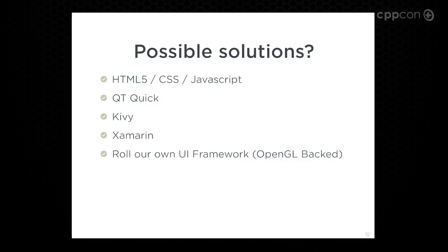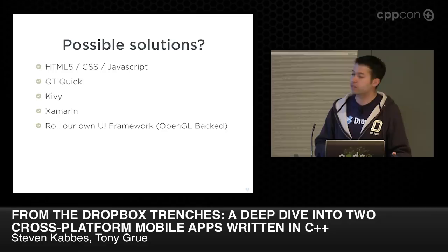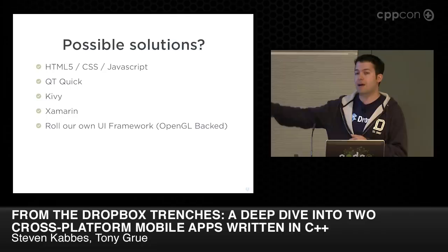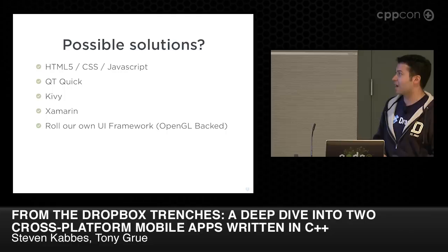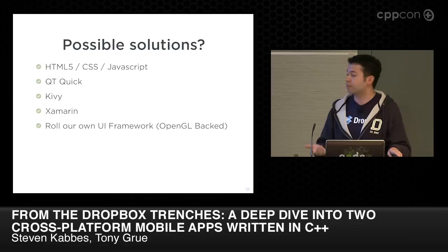Could we use HTML5? We had seen Facebook attempt this and had talked with them a lot about it. We were also wary of a platform where we couldn't really dig into the performance of rendering, because we care about user experiences a lot. Also, talking to the platform is a little tricky — there are solutions like PhoneGap, but most of them incurred either overhead or latency. We looked at things like Qt Quick, which was really developing at the time, much better now. We looked at Kivi, which is still quite a developing framework. And we also looked at Xamarin, which is actually probably the most promising one we didn't go with, and it's changed a lot even since we evaluated it — that makes it more promising.